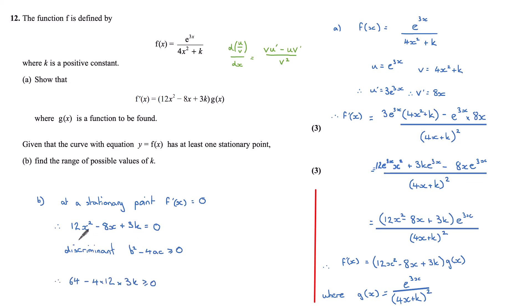So in my case here, that's (-8)², which is 64 minus 4 times a, 12 times c, 3k. Simplifying this gives me 64 is greater than or equal to 144k. Dividing by 144 gives me that k should be less than or equal to 4/9, being careful with our inequality sign here.